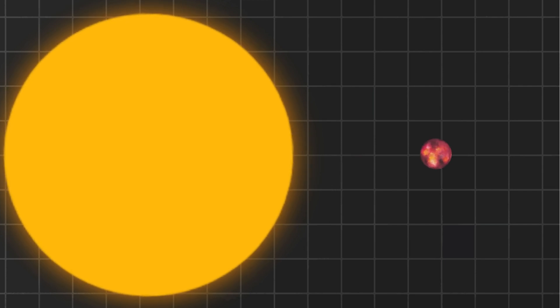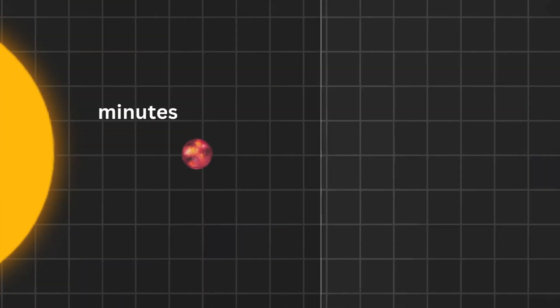First stop, Mercury. It's the closest planet to the sun, so light gets there in just 3.2 minutes. That's faster than making popcorn.